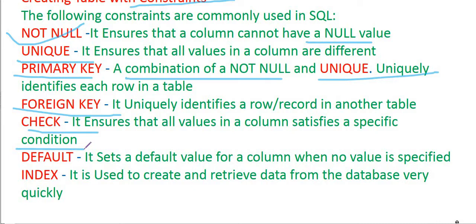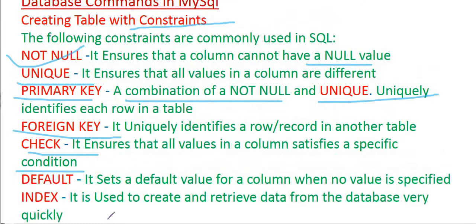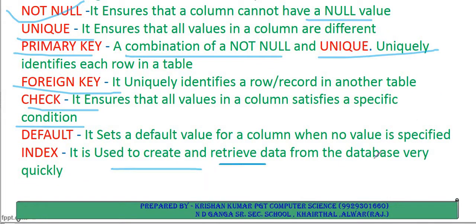DEFAULT sets a value for a column when no value is specified. If you set a default value, then whenever a user does not enter any value in that column, the default value is used automatically. For example, if we set the default city as Jaipur, whenever a user leaves that column blank, Jaipur appears automatically. INDEX is used to create and retrieve data from the database very quickly — through indexing you can retrieve data very fast.